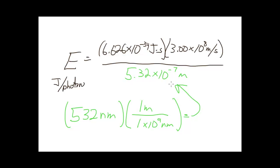We've got all our values put into the equation with the proper units. And now we can just crank out our answer. And if we do that, we get 3.74 times 10 to the minus 19th joules per photon.